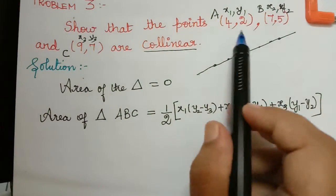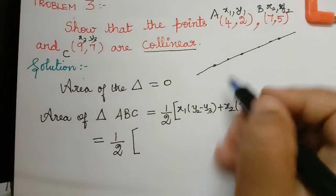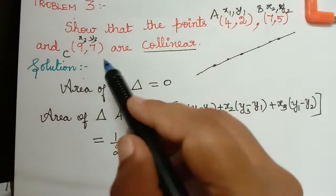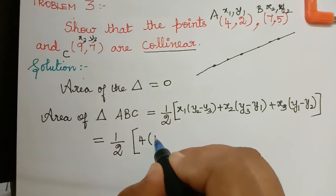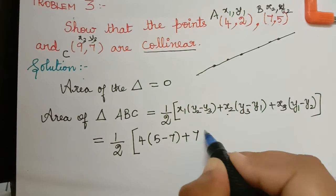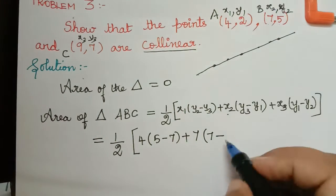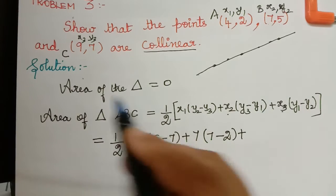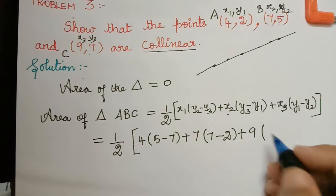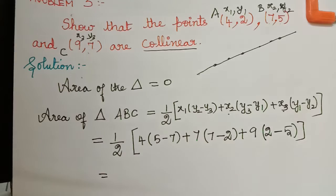Now let us substitute these values. The area of triangle ABC equals one-half multiplied with: x1 is 4, so 4 multiplied with (y2 minus y3) — y2 is 5, y3 is 7, so (5 minus 7); plus x2 is 7, so 7 multiplied with (y3 minus y1) — y3 is 7, y1 is 2, so (7 minus 2); plus x3 is 9, so 9 multiplied with (y1 minus y2) — y1 is 2, y2 is 5, so (2 minus 5).